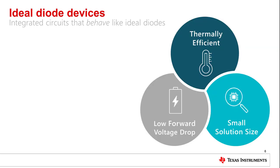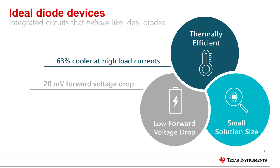One of the ideal diode's key strengths is its low forward voltage drop compared to a traditional Schottky diode. Ideal diodes surpass both discrete diode and MOSFET solutions when it comes to thermal efficiency. Most importantly, ideal diode devices integrate all these features into a substantially smaller size. Now, let's take a deeper look.